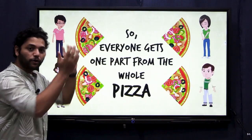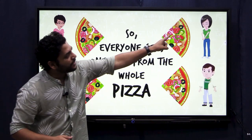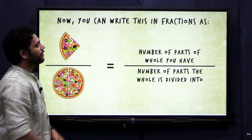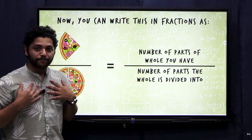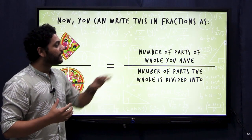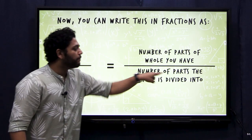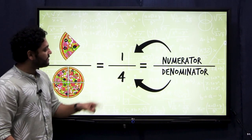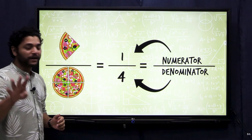Everyone gets one part from the whole pizza and everyone is happy because they have got equal parts. How can I represent what fraction of pizza one person got from the whole? It can be done through this representation: number of parts of the whole you have, divided by the number of parts the whole is divided into. How many parts did I get? One part. How many parts did we divide the pizza into? Four parts. So the fractional representation is one by four.